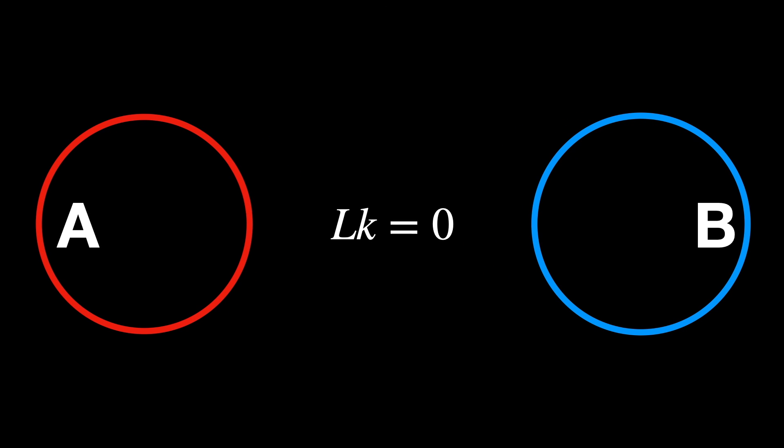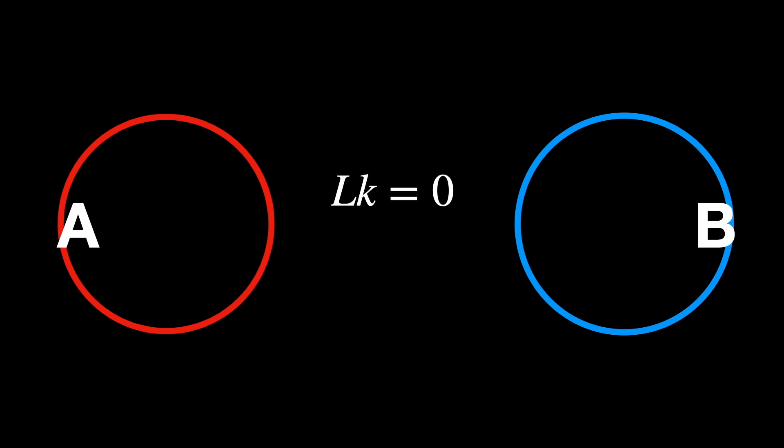A hundred years later, Carl Friedrich Gauss came up with the concept of the linking number. It is used to measure how two closed curves or loops in a three-dimensional space are intertwined. Imagine you have two loops, A and B. If they are not touching or crossing, the linking number is zero because they are completely independent with no linking at all.